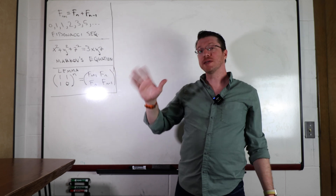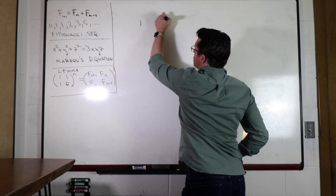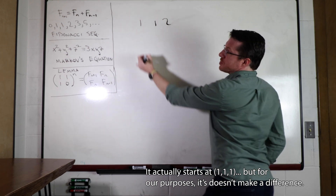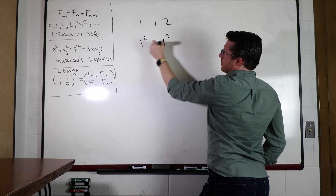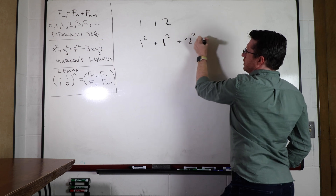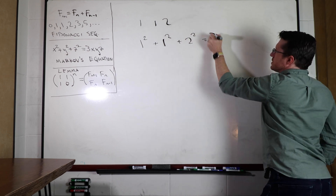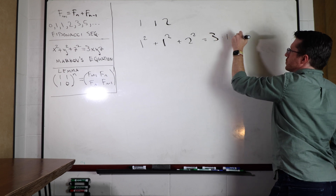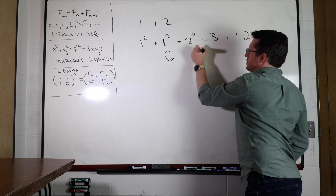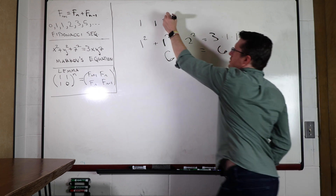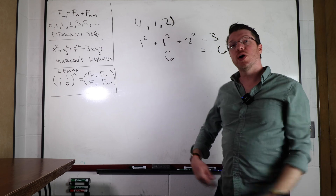He gave a method where you can start with a solution, which is 1, 1, 2. You can verify this is a solution because 1 squared plus 1 squared plus 2 squared equals 1 plus 1 plus 4, which is 6, and that's equal to 3 times 1 times 1 times 2, which is also 6. So this triple is called a Markov triple.